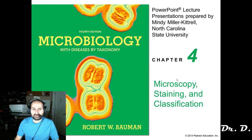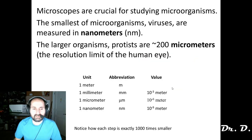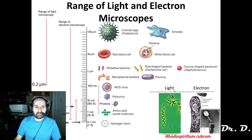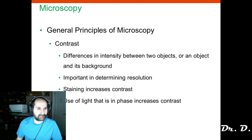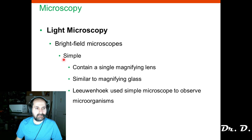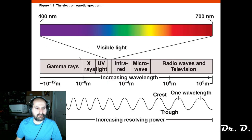Let's jump into chapter four. You should know that with a light microscope you cannot see things as small as viruses, but with electron microscopes you can. You should know what contrast means and what a bright field microscope is. You may want to know that short wavelength light is higher energy, and longer wavelength visible light is lower energy.